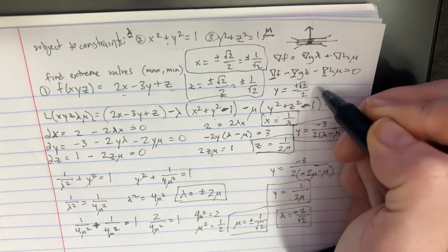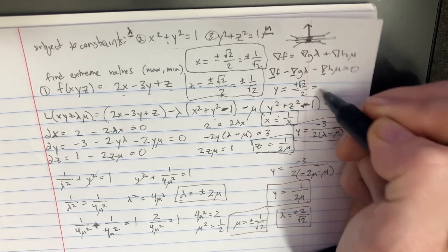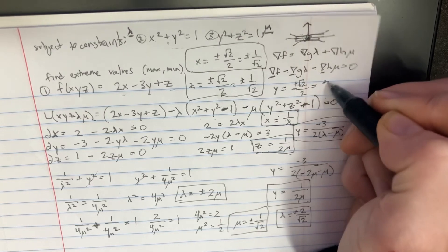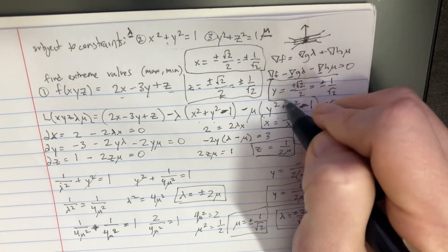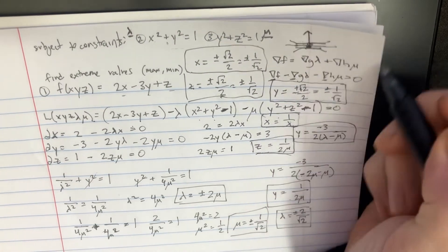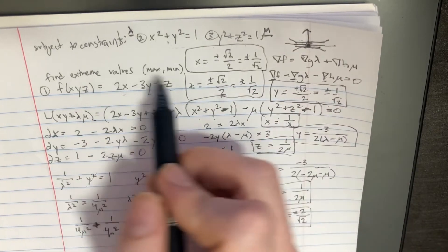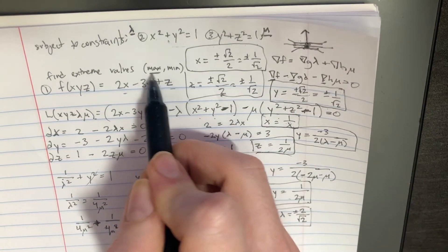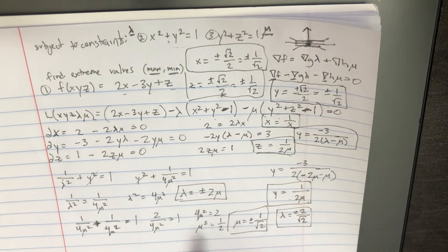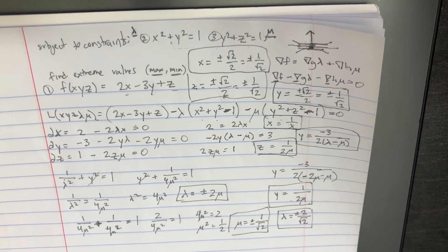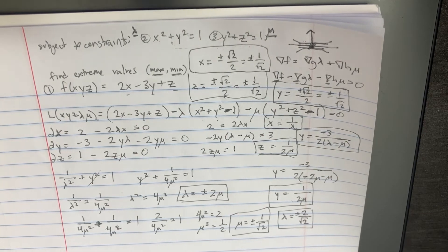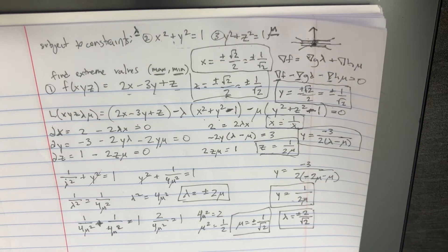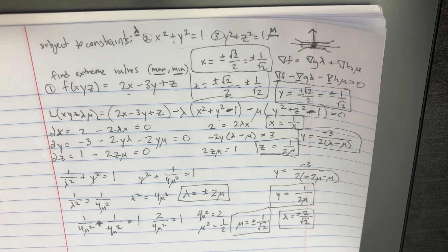They're all plus or minus √2/2, or equivalently 1/√2. Those are the values that would potentially create a maximum or minimum. We don't know which ones yet — there are so many combinations; in fact, if we were to try to plug them all in it would be like 18 different combinations.